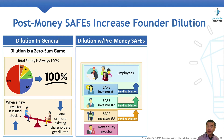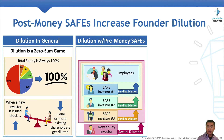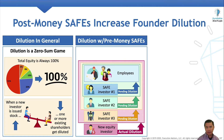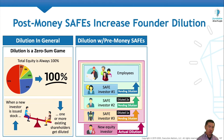Finally, a new investor agrees to buy preferred stock in the startup. This triggers the conversion of all three safes into preferred stock. When this happens, all of the existing stakeholders get diluted — including the employees as well as all three safe holders. What is clear is this process results in safe investor number three being diluted one time, safe investor number two being diluted two times, safe investor number one being diluted three times, and the employees being diluted four times.